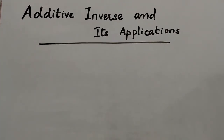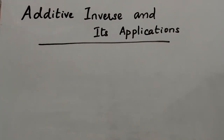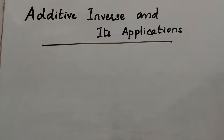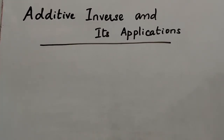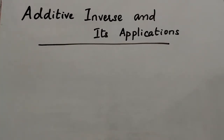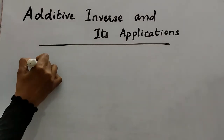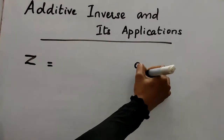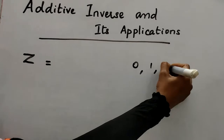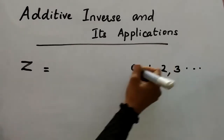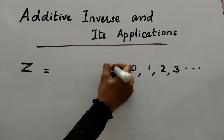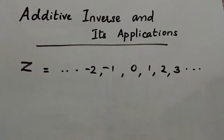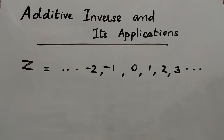Hi friends, today I'm going to explain the additive inverse of integers. Before starting, let's recall integers. Integers means positive numbers: 0, 1, 2, 3, etc., together with negative numbers: negative 1, negative 2, etc.